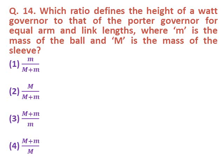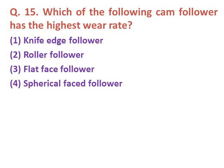Question fourteen: Which ratio defines the height of the Watt governor to that of the Porter governor for equal arm and link length, where m is the mass of the ball and M is the mass of the sleeve? The correct answer is option one: m upon (M plus m) — mass of ball upon (mass of sleeve plus mass of ball).